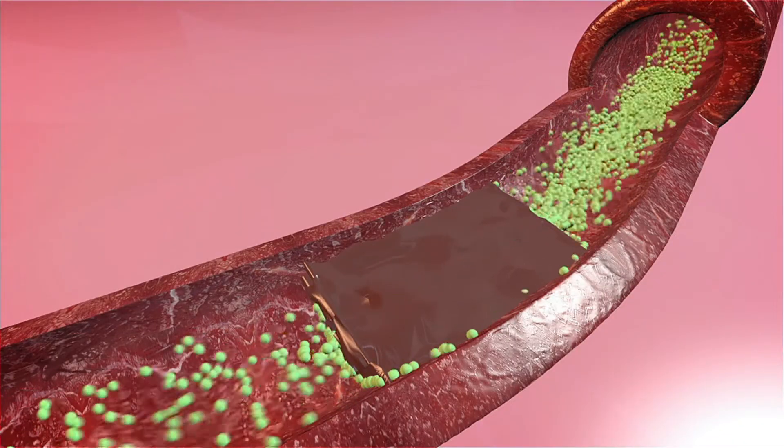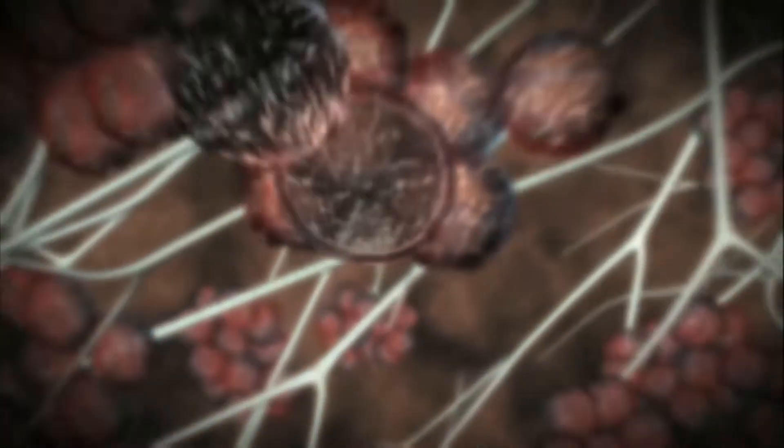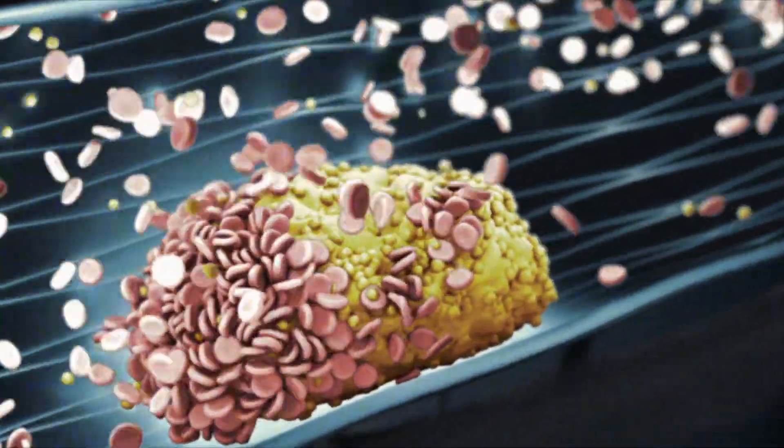Arteries are the blood vessels that carry the oxygenated blood and nutrients from the heart to other organs of the body. The plaque consists of fats, calcium, cholesterol, and other components from the blood.